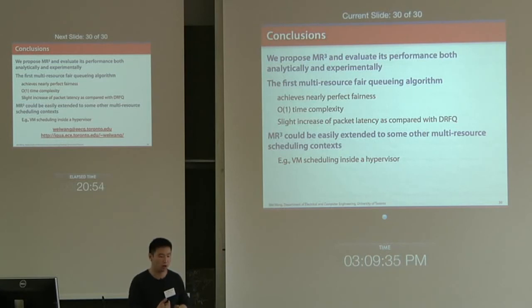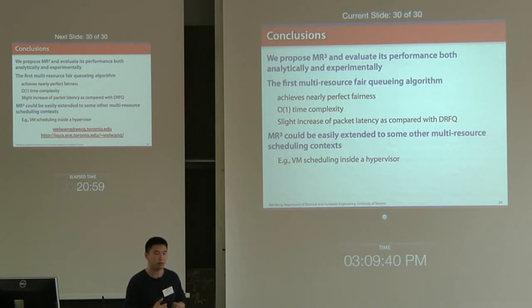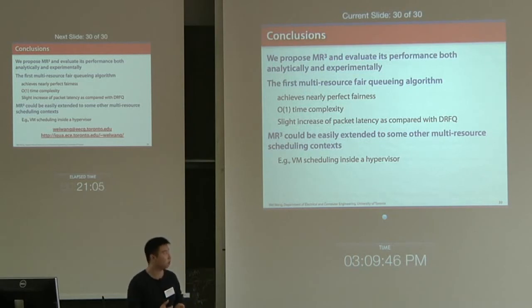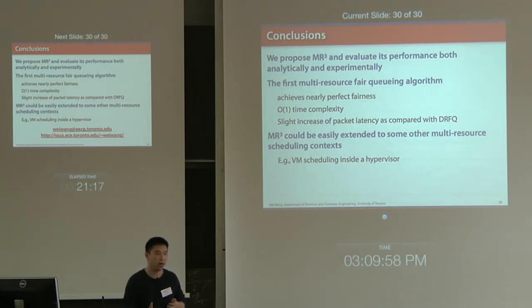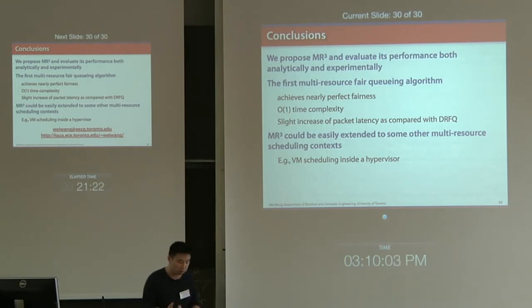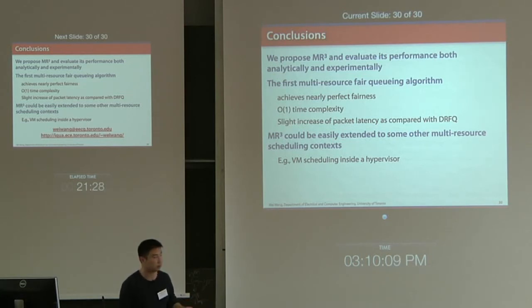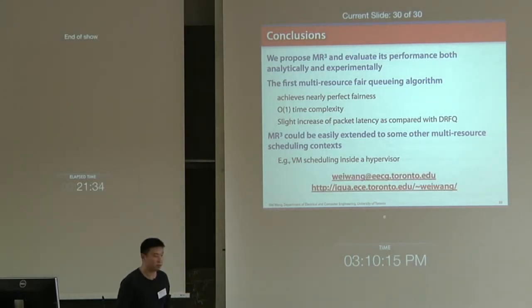In conclusion, we propose a Multi-Resource Round-Robin algorithm and evaluate its performance both analytically and experimentally. This is the first multi-resource fair scheduling algorithm that achieves nearly perfect fairness and requires only constant time complexity to make a scheduling decision. The price is a slight increase in packet latency compared with existing designs. As future work, we could extend the algorithm to other multi-resource contexts, such as VM scheduling inside a hypervisor. That's all for my presentation. Thank you.